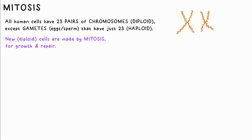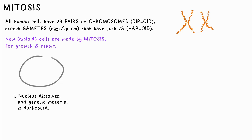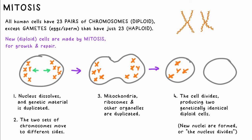New cells must constantly be made for growth and repair, and they do this by duplicating through mitosis. The genetic material is duplicated, and the number of ribosomes and mitochondria is doubled as well. The nucleus breaks down and one set of each chromosome pair is pulled to opposite sides of the cell. A new nucleus forms in each side to house the copied chromosomes, and we now have two identical cells. Note: AQA just says the nucleus divides, which isn't quite right, but you will get the mark if you write it.